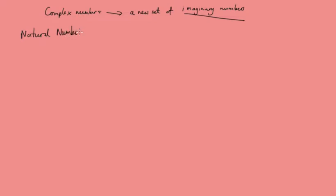The set of natural numbers is given the symbol N and it contains all the numbers 1, 2, 3, 4 and so on. Note that in the beginning of mathematics there was no zero. Then people began to realise there were more numbers — they began to accept that negative numbers were numbers and the need for zero became apparent. That's when we get the integers.